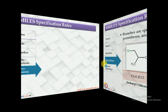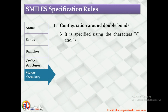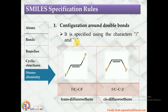SMILES specification rules can also be used to represent the stereochemistry of structures. To represent cis and trans conformers, or configuration around a double bond, the forward slash '/' and backward slash '\' characters are used. Two forward slashes represent the trans isomer, while one forward slash and one backward slash represent the cis isomer.